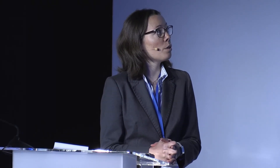For the key parameters included in the design guideline manual: the type of traffic will be passenger P1, P2, and freight F1. The gauge to be used is GC. The axle load is 25 tons per axle, which is a bit more than the TSI requirement, but as already mentioned, it reflects the long-term vision and consideration of the possible evolution of the railway.